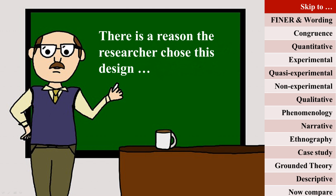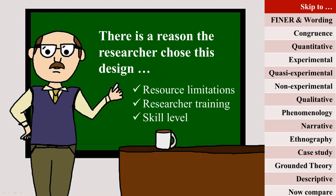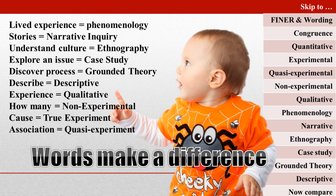Ask yourself if you buy their justification. Sometimes more than one methodology may be appropriate for a question. Sometimes a methodology is selected not because it is the best one, but because of other factors like resource limitations, researcher training, or skill level. However, if researchers have a question that they cannot answer with an appropriate methodology, the question should be reworded for congruence and clarity.